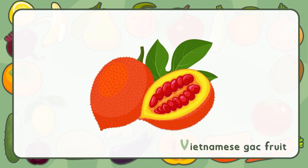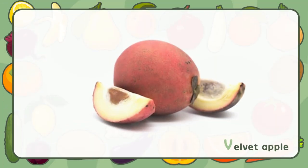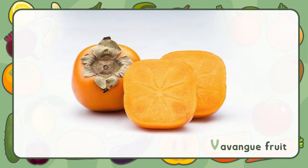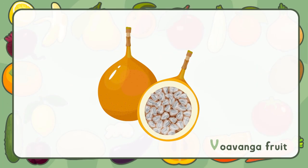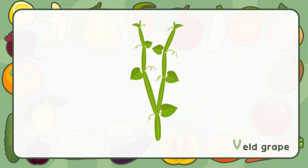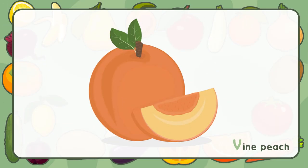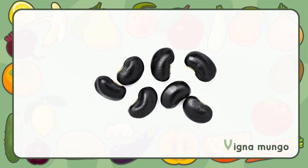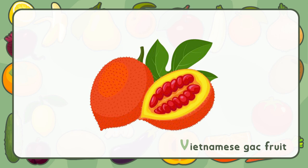Vietnamese Gak Fruit. Victoria Plum. Velvet Apple. Valencia Orange. Vavingay Fruit. Vovonga Fruit. Veldt Grape. Vine Peach. Vanilla Bean. Vigna Mungo. Vietnamese Gak Fruit.